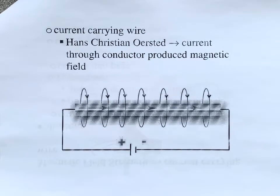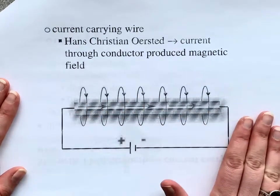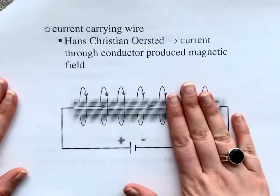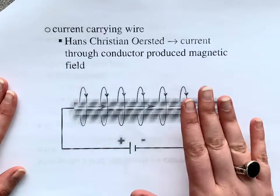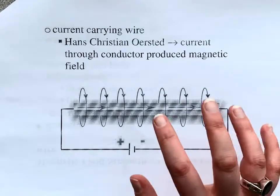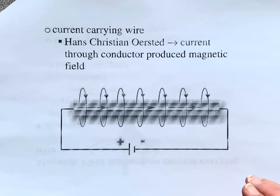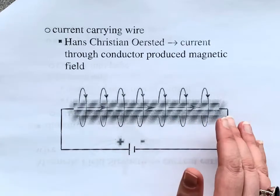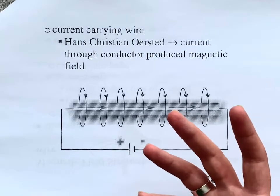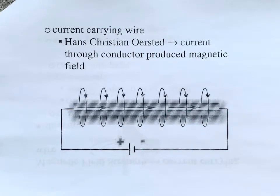When we went over magnetic field lines and how magnetic fields are created, it was because of moving charges. If charges are moving uniformly in one direction, they're definitely going to create a magnetic field. Hans Christian Oersted was actually trying to prove that a current-carrying wire didn't have a magnetic field, and then he proved that it did. He put a current through a wire and put a compass underneath it, and the compass needle moved.